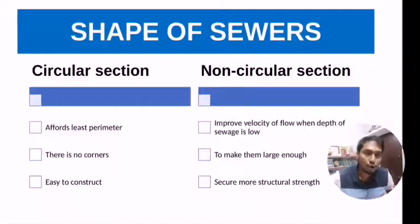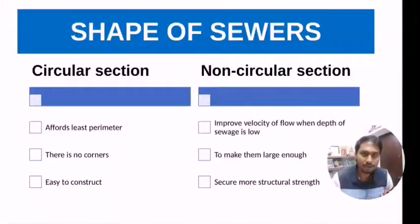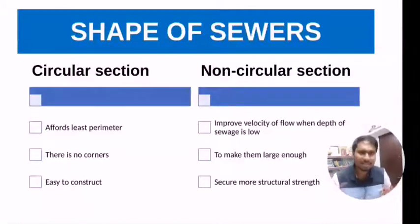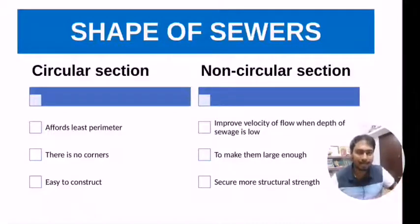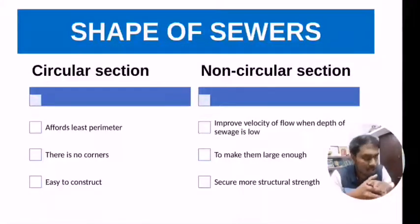In the circular section there are no corners, and that is why the chance of deposition of organic matter is less. Circular sections are also easy to construct. These are the various reasons for which we generally consider circular sections in most practical cases.